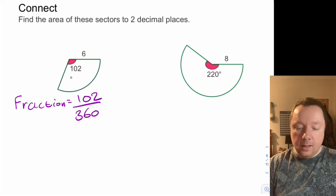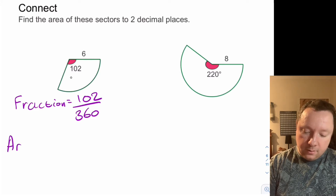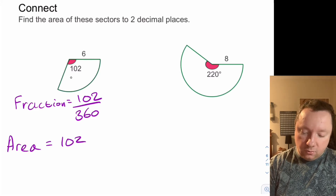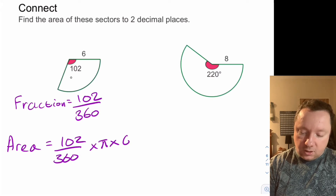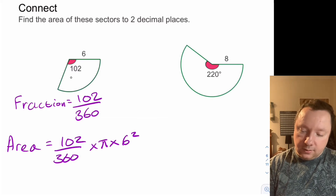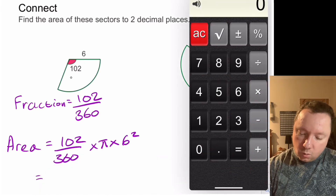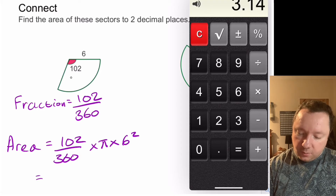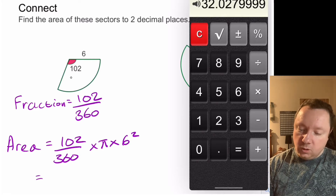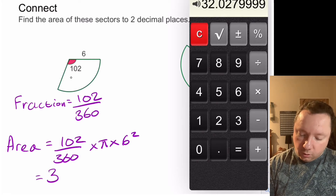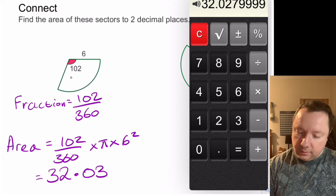So I'll go straight into the area. The area is the fraction of the circle: 102 out of 360 times pi times six squared — r is six. Using a calculator: 102 divided by 360, times pi (3.14), times six times six gives 32.03 centimetres squared.